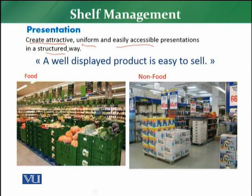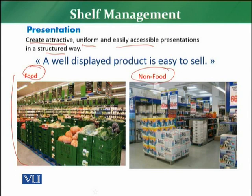There are two examples here — one for food and one for non-food. For the food example, you can see a uniformity in the presentation when buying vegetables or fruits. The products are easily accessible whether the customer has a trolley or not, and the display is structured — not unorganized like open markets or mandis. You can easily identify the difference between a structured and a non-structured display.